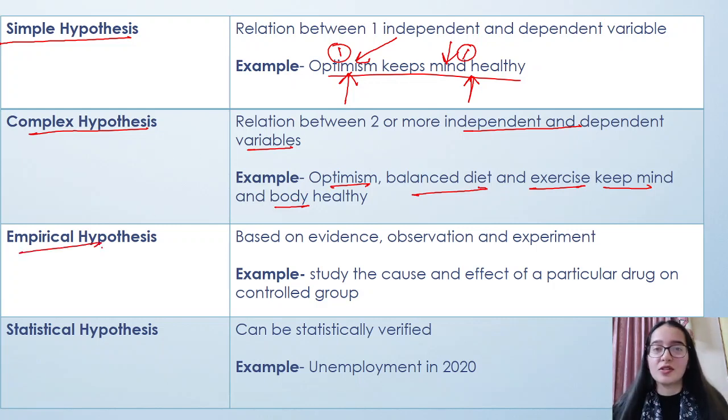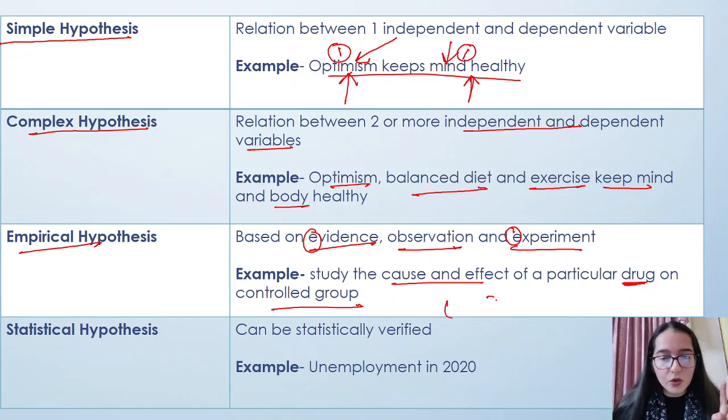Let's have a look at the empirical hypothesis. It is one which is based on evidence, observation that you are observing, or an experiment that you have done. Remember: E for empirical, E for experiment, E for empirical, E for evidence. Observation, you have to remember. Example: To study the cause and effect of a particular drug - particular drug means medicine here - on a controlled group. Like COVID vaccine, when the vaccine came, it was tested before on a certain group of people. What was its impact? Positive impact came from there, then it was given to everyone. So you can understand this in this way.